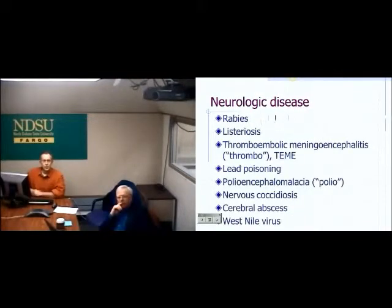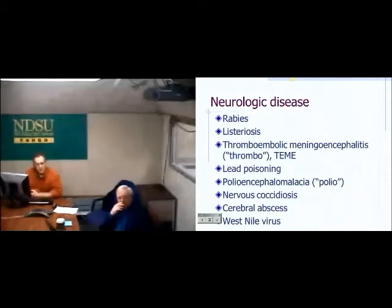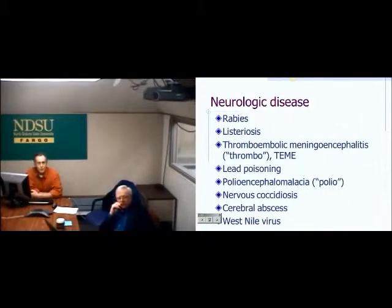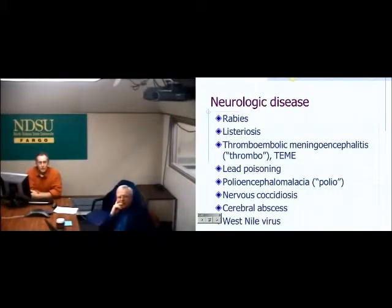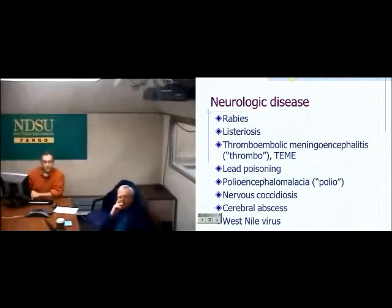Let's switch gears to diseases that affect the nervous system. The ones we primarily deal with at the lab are rabies, listeriosis, thromboembolic meningoencephalitis or bacterial infections from Histophilus, lead poisoning, and polioencephalomalacia — essentially a sulfur problem in cattle. The bottom diseases on the list are more sporadic and not as commonly diagnosed.